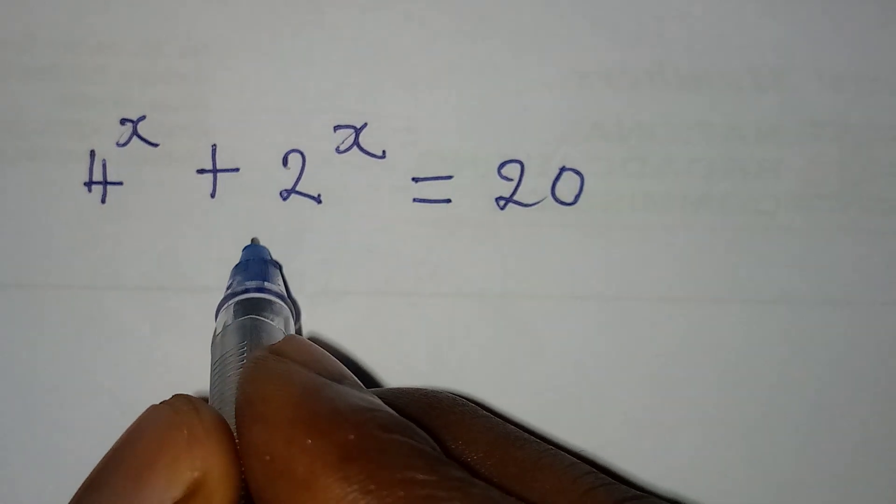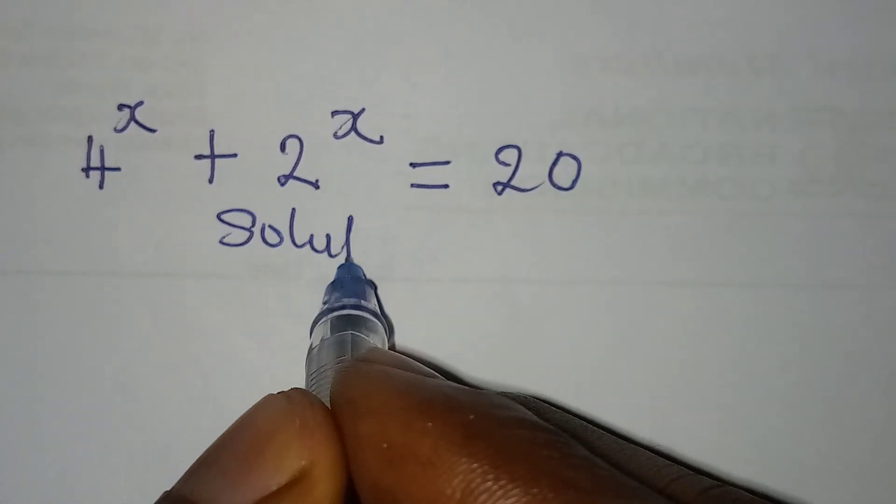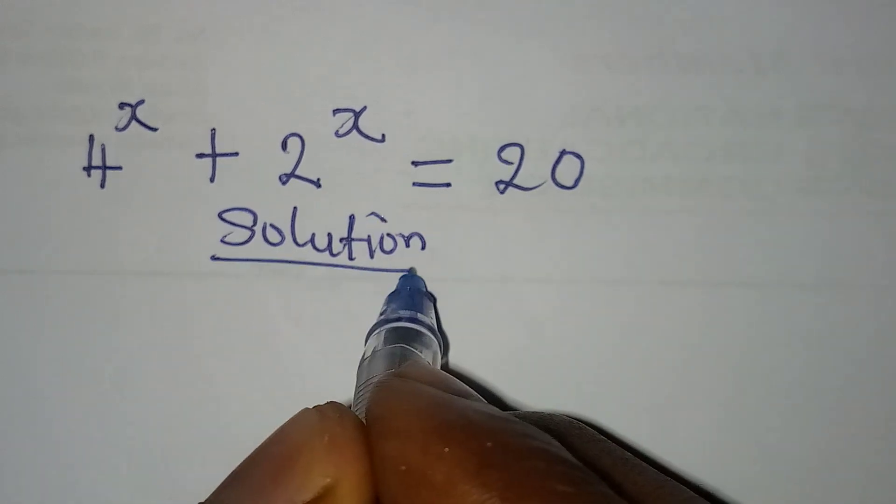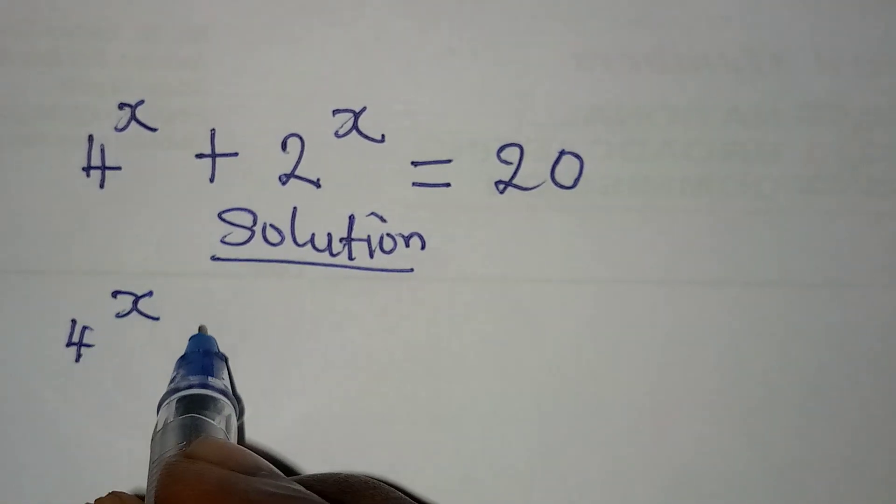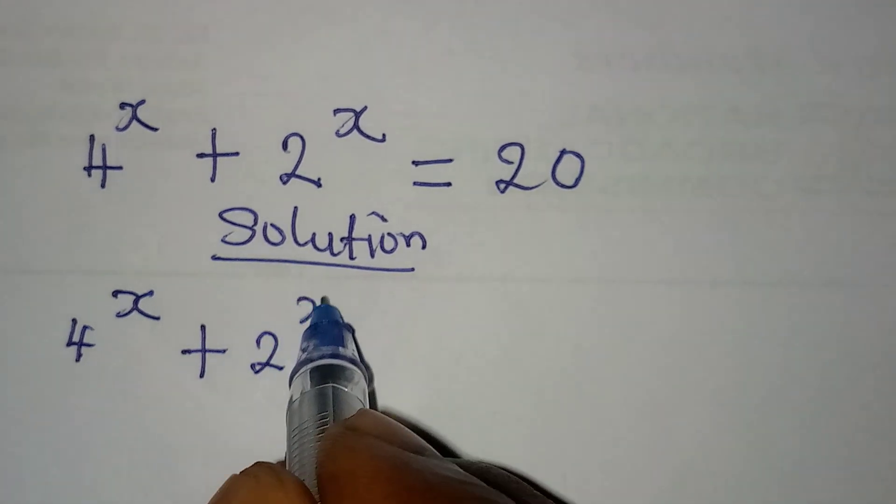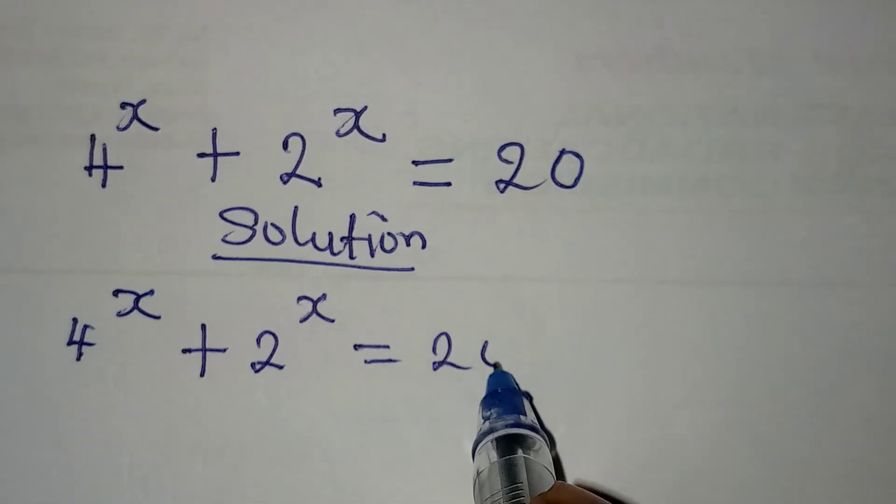Hello everyone, let's solve this problem very quickly. 4 to the power of x plus 2 to the power of x equals 20.